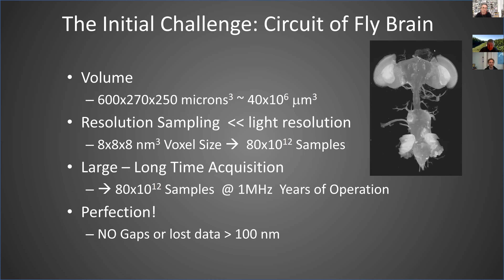One of the first challenges when I landed at Janelia was: can you image the circuit of a fly brain? Janelia was founded on two big areas — imaging and the circuitry of neurons. The fly brain has a volume of about a 40th of a cubic millimeter — 40 million cubic microns. To see enough detail to trace neurons you really need to sample with about 8-nanometer voxels. That means a lot of data, years of operation at 1 MHz acquisition, and imaging must be perfect — no gaps — so you can trace neurons from one side to the other.